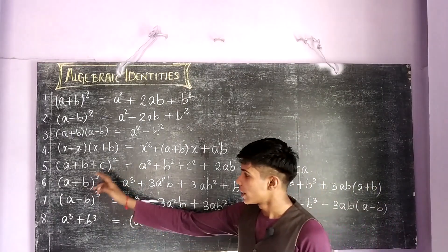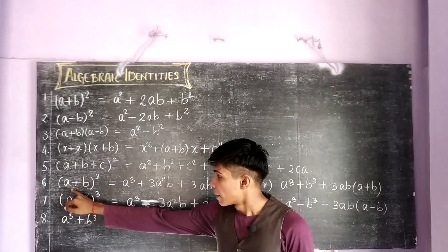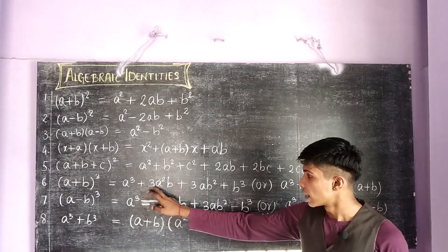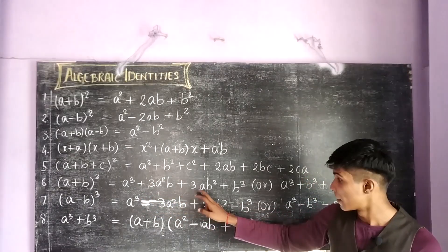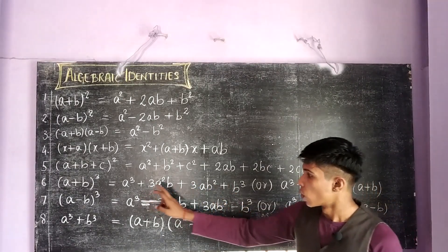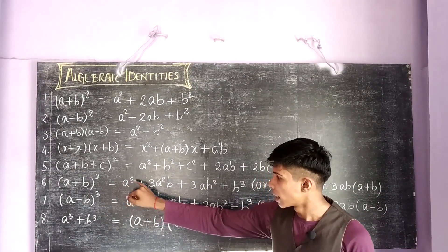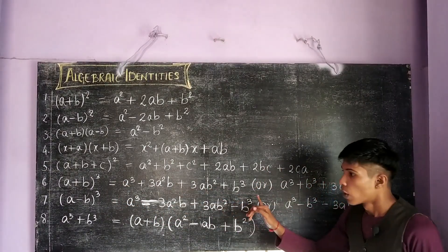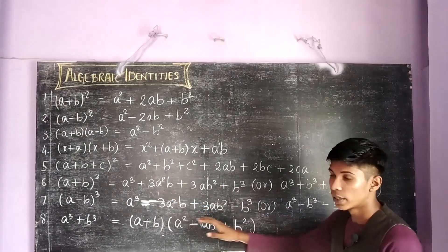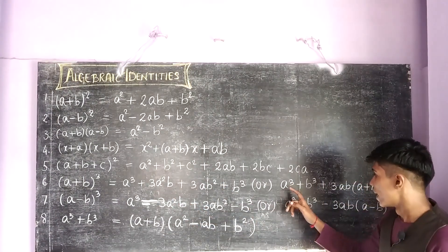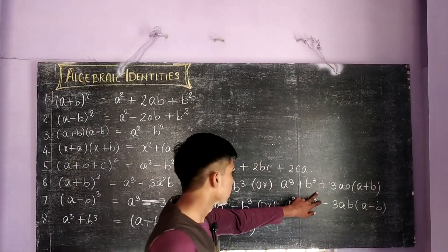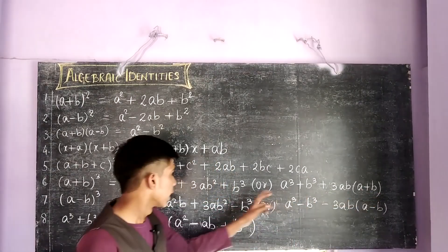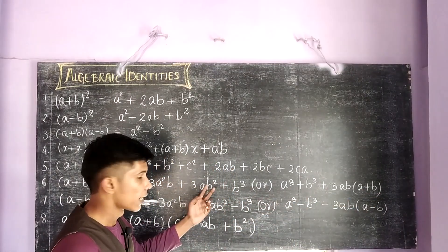The next identity is a plus b whole cube, which equals a cube plus 3a square b plus 3ab square plus b cube. Here we can see that the power of a decreases and the power of b increases. The same expression can be written as a cube plus b cube plus 3ab into a plus b, by taking 3ab as common.